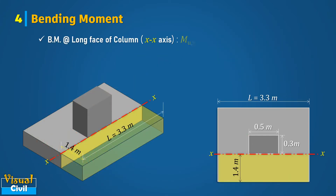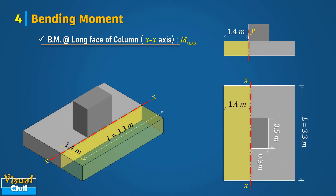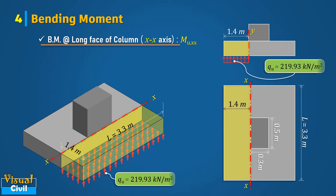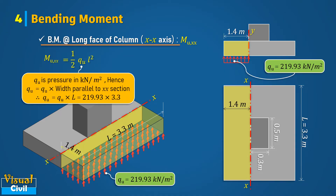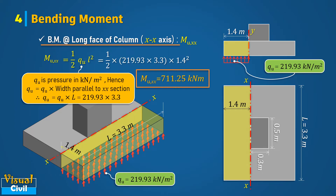Next, compute the bending moment about the long face of the column. Compute the moment due to factored net upward soil pressure acting over the entire area of the footing on one side of the XX section plane as shown in the figure. Computation of mu XX is similar to mu YY, which was earlier discussed. After solving, we get the value of mu XX equal to 711.25 kilonewton meter.